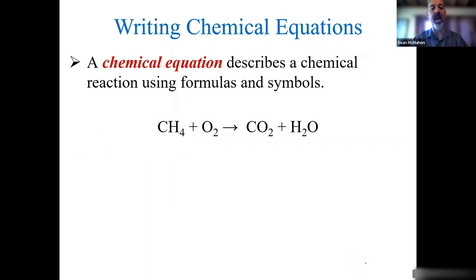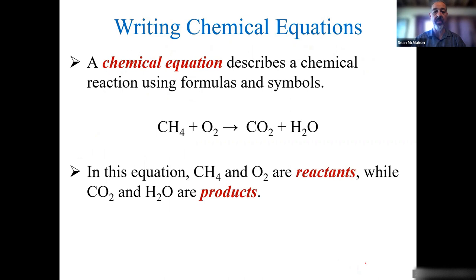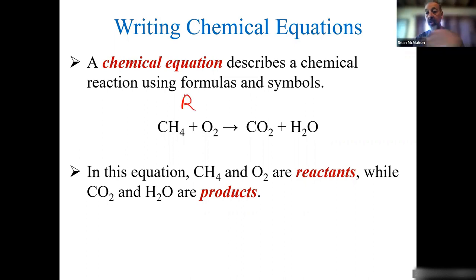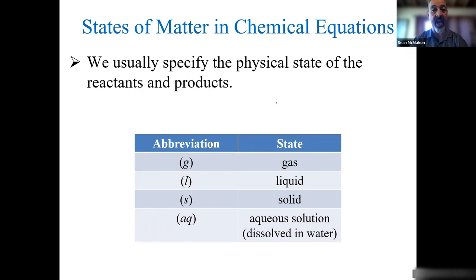So how do we write chemical reactions or equations? We use symbols and formulas. In this equation, we have methane CH4 and oxygen as reactants. Typically, your reactants are on the left side — they're your starting material. Your products are what you produce; they follow the arrow, called the yield, and your products are on the right side. We usually have to specify the physical state: subscript g for gas, L for liquid, S for solid, and AQ for aqueous, which means dissolved in water — that's what aqueous means. It's a solution.